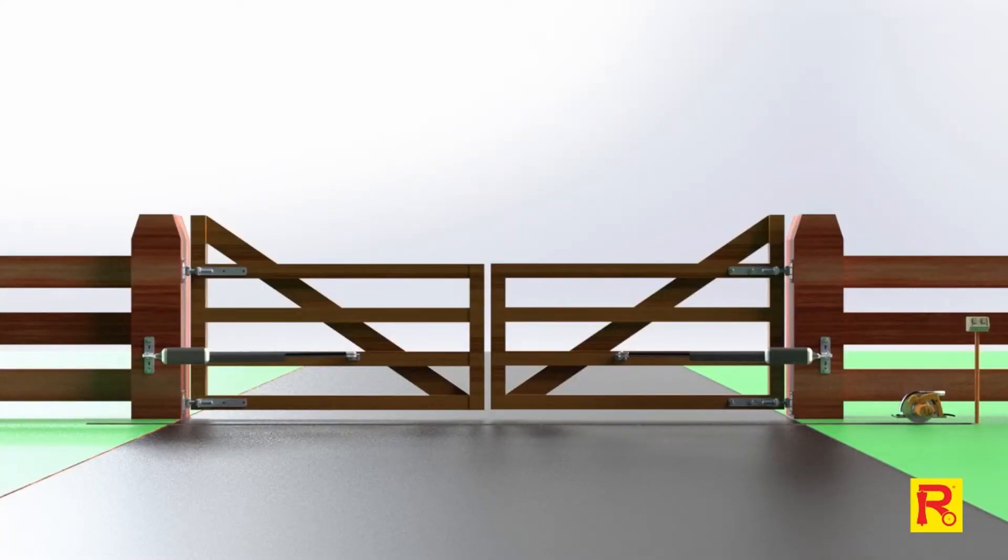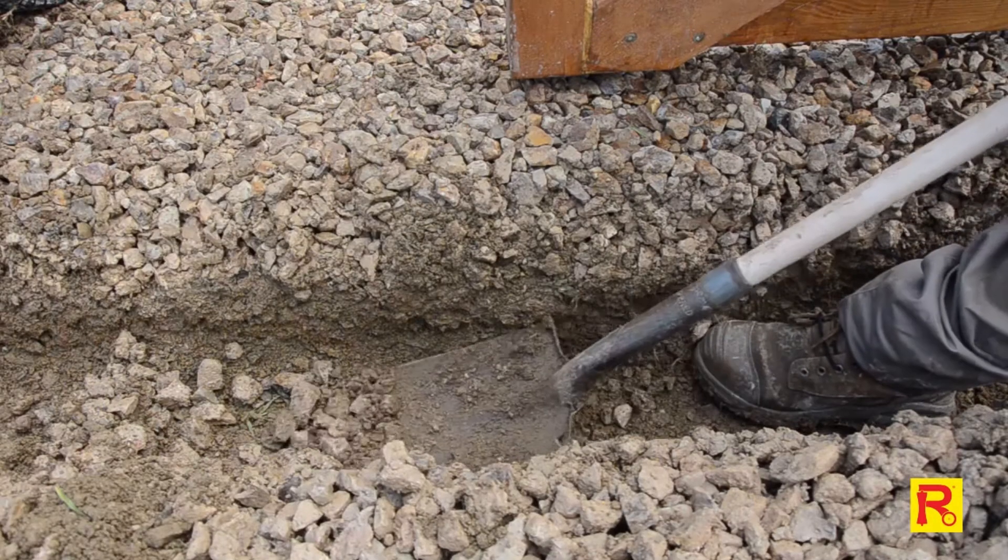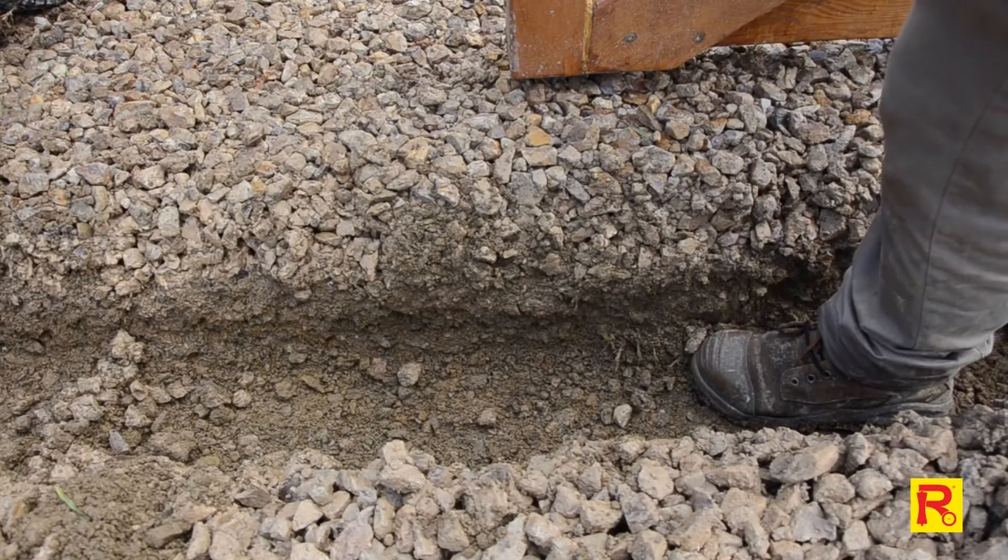For concrete driveways, use a circular saw with a concrete cutting blade and cut a shallow trench to run the power lead in conduit. For gravel driveways, simply dig a trench about 150mm deep.